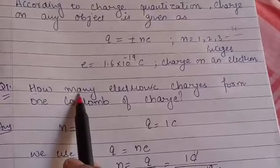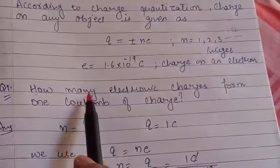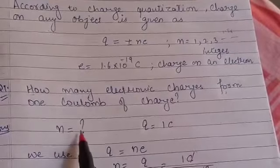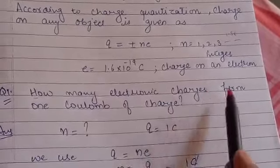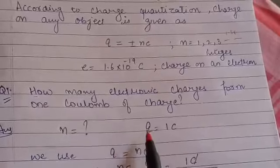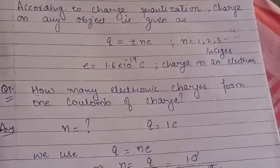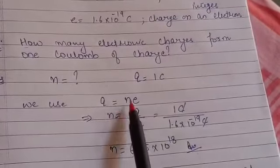So how many means we have to find the number of electronic charges. This means here N is to be found and charges form 1 coulomb of charge, the value of charge is given 1 coulomb. So we will use the formula Q is equal to N E.